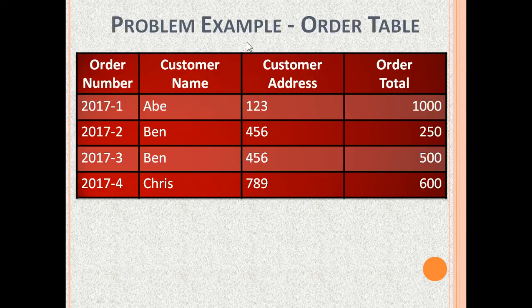Now, let us see some examples of tables that are not in 2NF and how to normalize them to 2NF.